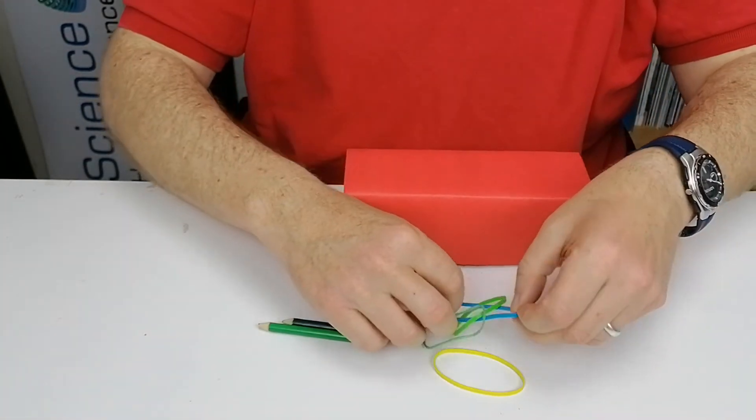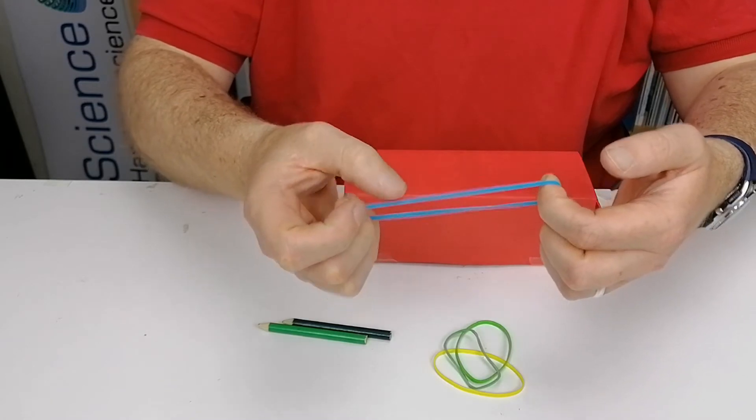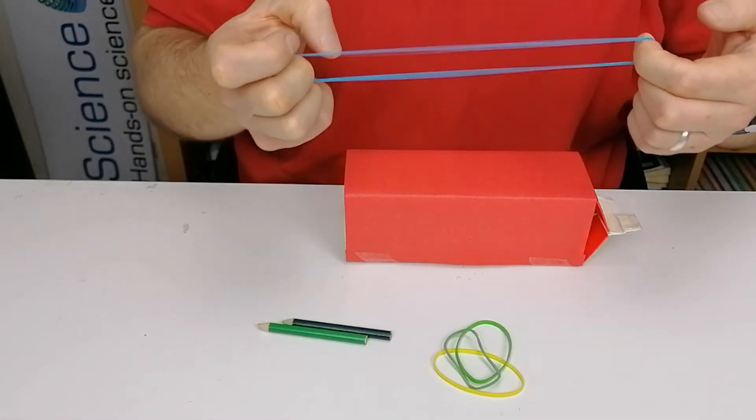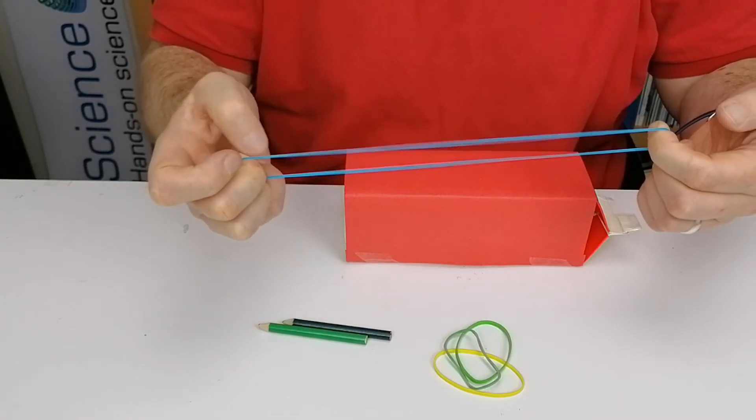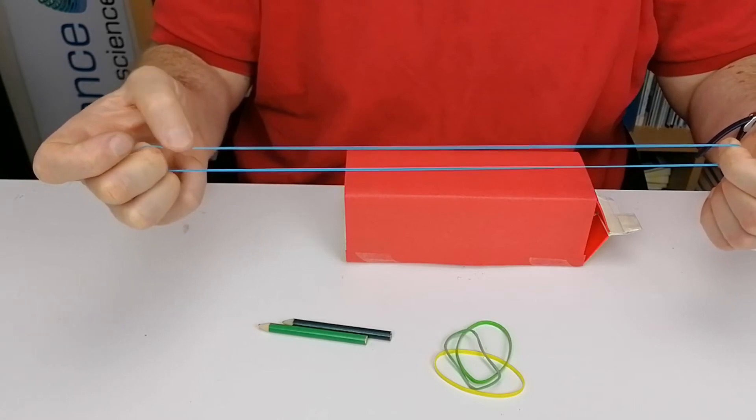Now just to explain tension: if I take one of these elastic bands and pull it, you can barely hear the sound. I'll put it up to my microphone. But if you pull it harder, that's putting more tension on it. You can hear the sound and it gets higher and higher as the tension increases.